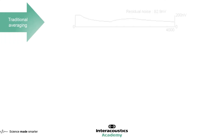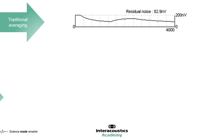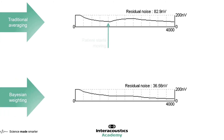To show the effect of Bayesian weighting in action, here are two examples. In the top example, with traditional averaging in place, the residual noise increases when the patient becomes unsettled. Once they settle back down, the residual noise reduces over time. In the bottom example, with Bayesian weighting activated, when the patient starts moving, the residual noise doesn't increase.